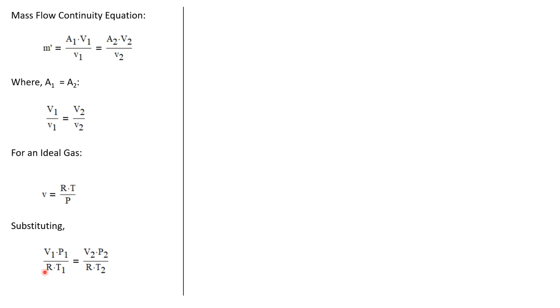So the left side of our equation becomes the velocity at state one times the pressure at state one divided by the gas constant times T1. That is equal to the velocity at state two times the pressure at state two divided by the gas constant times T2.